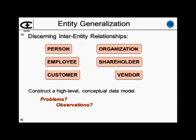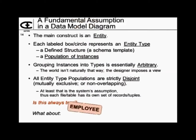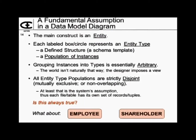Overlapping populations and commonalities are clues that something else can be done to improve the situation. The fundamental assumption: the main construct is an entity or an object. Each is labeled as an entity type and each one implies a population of instances. The grouping of things into types is essentially arbitrary — the world isn't naturally organized that way. The designer chooses how they're going to define various object populations. And probably the most important assumption is that every entity type's population is strictly disjoint — at least that's the system's assumption.